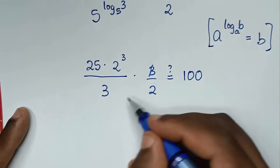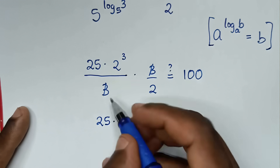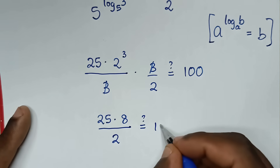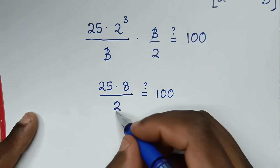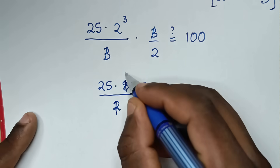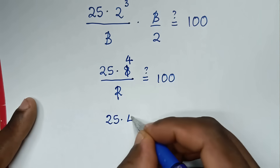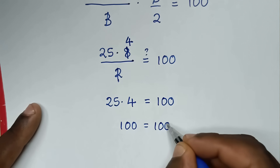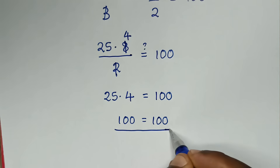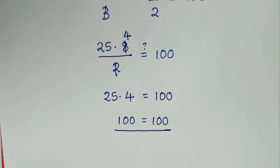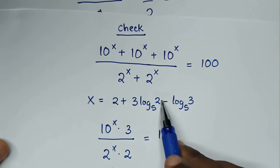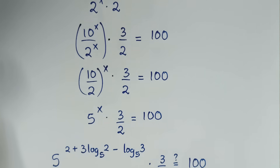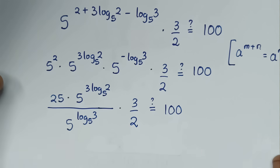Then to simplify: 3 will cancel 3, giving 25 times 2 power 3 which is 8, over 2. Then 2 will cancel — 8 divided by 2 is 4 — so 25 times 4 is equal to 100. 25 times 4 is 100, equals 100. So left side and right side are equal, confirming the value of x is 2 plus 3 log of 2 base 5 minus log of 3 base 5. Thank you, don't forget to subscribe to my channel, and see you in the next video, bye bye.